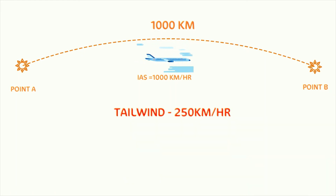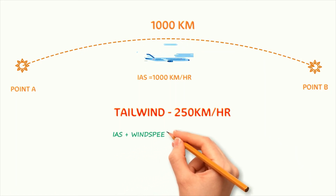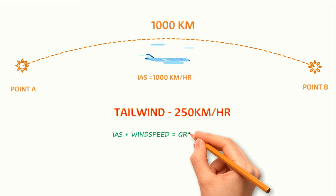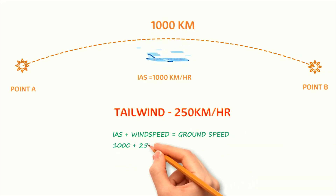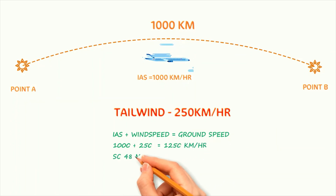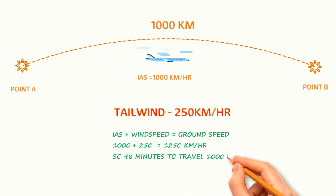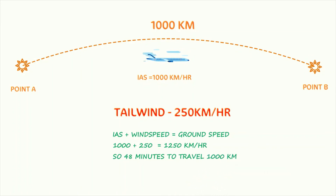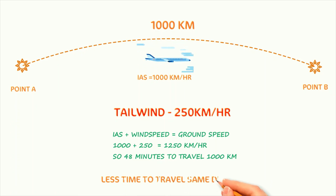Now let us consider a tailwind of 250 km per hour. The aircraft now has assistance from the wind pushing it from behind, which results in lower drag. So the effective speed of the aircraft becomes 1250 km per hour. As a result, the aircraft takes only 48 minutes to cover the same distance. In essence, if there is tailwind, the aircraft takes shorter time to cover the same distance.